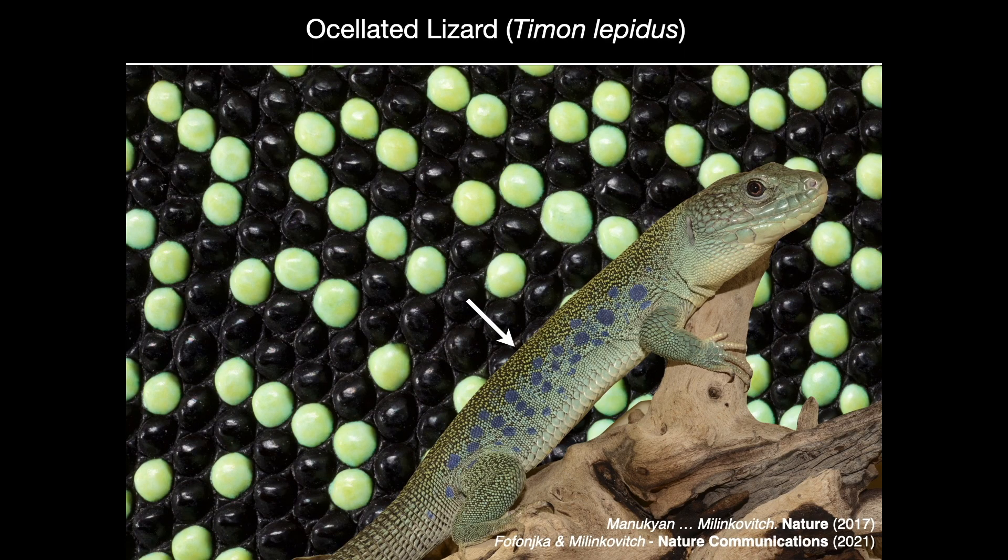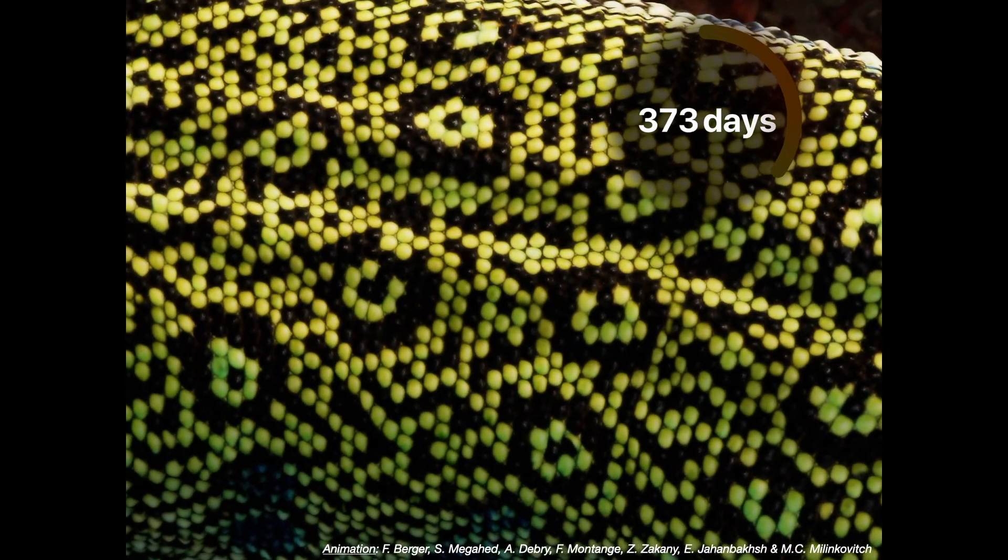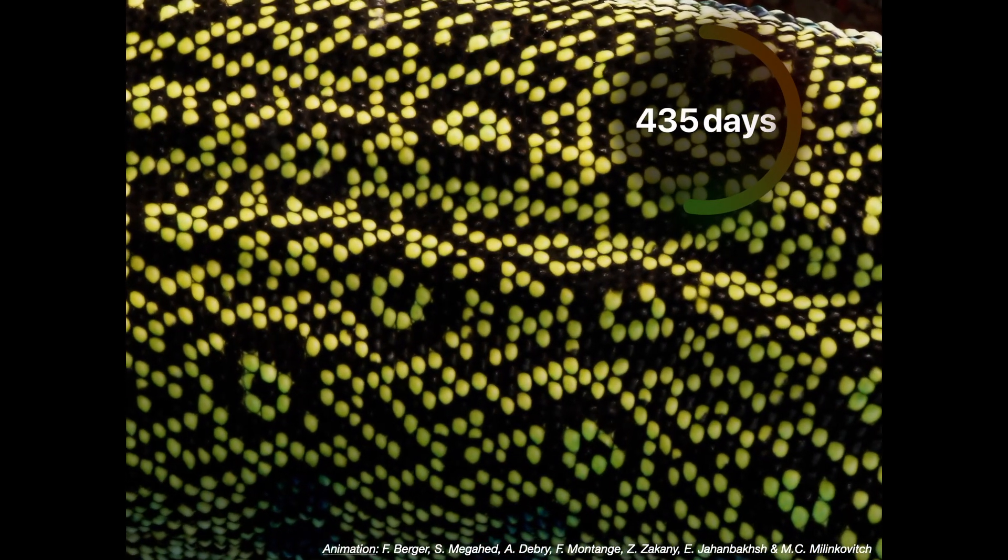Surprisingly, adult oscillated lizards exhibit a scale-by-scale color pattern. Even more surprisingly, many scales switch from green to black and from black to green during the life of the animal.